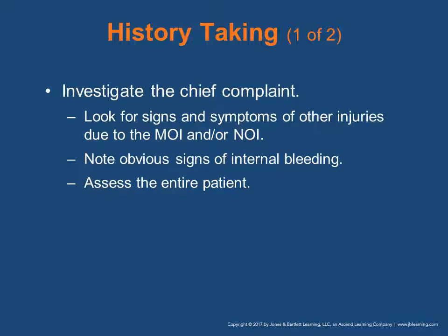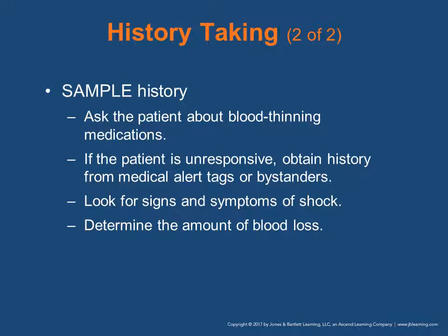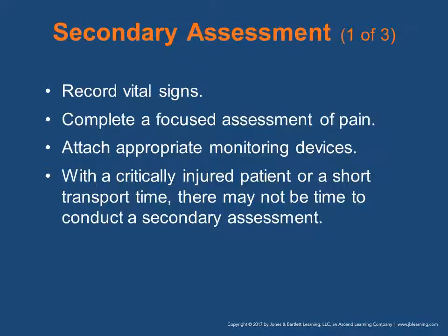Ask a bystander if possible. Note obvious signs of internal bleeding and assess the entire patient. During your history taking, ask the patient about blood-thinning medications, including aspirin. If the patient is unresponsive, obtain history from medical alert tags and bystanders — check their med box, open containers in the bathroom, beside the bed, or by the kitchen sink. Look for signs and symptoms of shock and determine the amount of blood loss. With a critically injured patient or a short transport time, there may not be time to conduct a secondary assessment — that is fine. Give everything you know about the patient in your report.